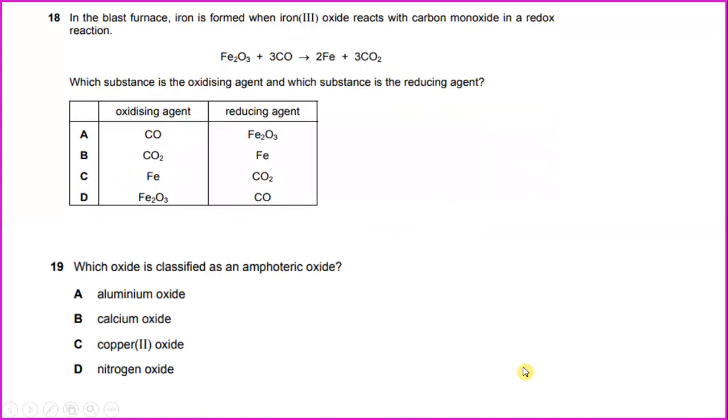In the blast furnace, iron is formed when iron(III) oxide reacts with carbon monoxide in a redox reaction. Which substance is the oxidizing agent and which substance is the reducing agent? Fe2O3 is undergoing reduction, so it acts as oxidizing agent. The answer for this will be D. And the reducing agent will be CO.